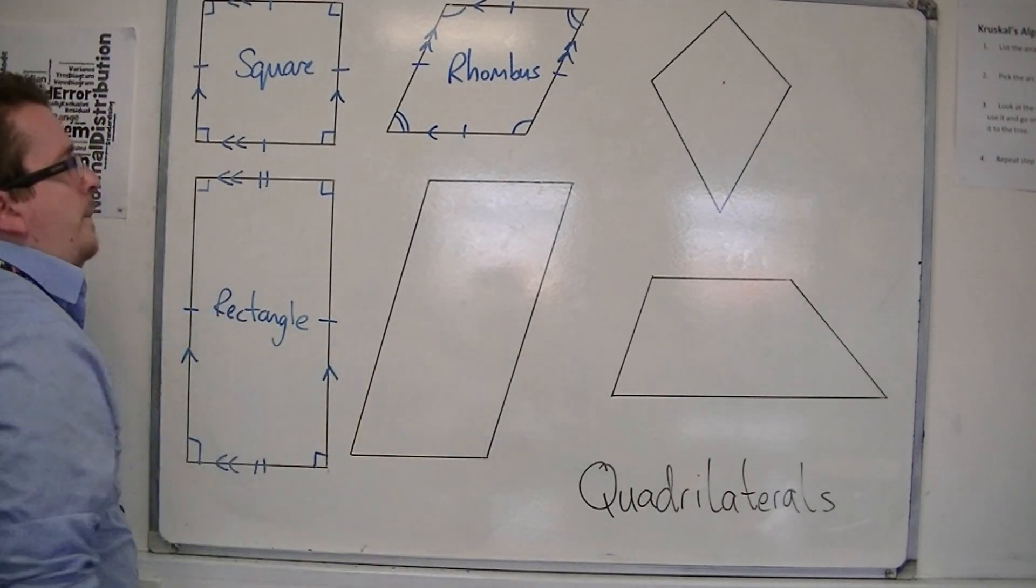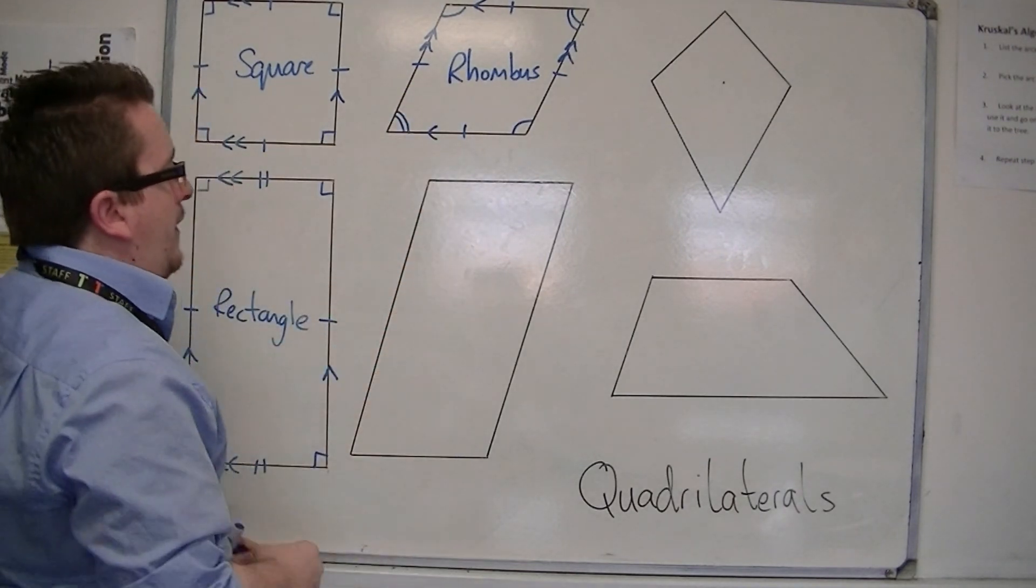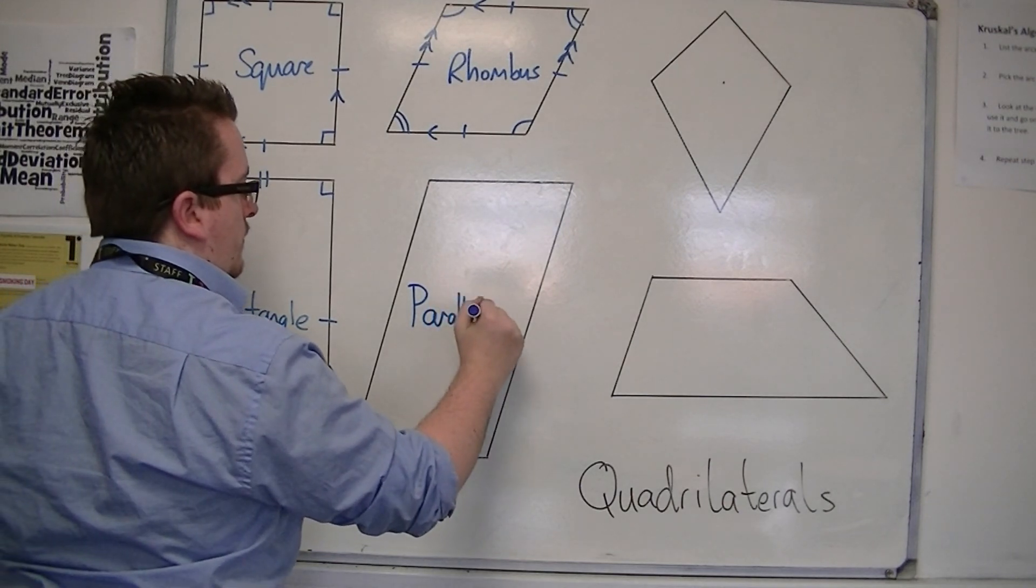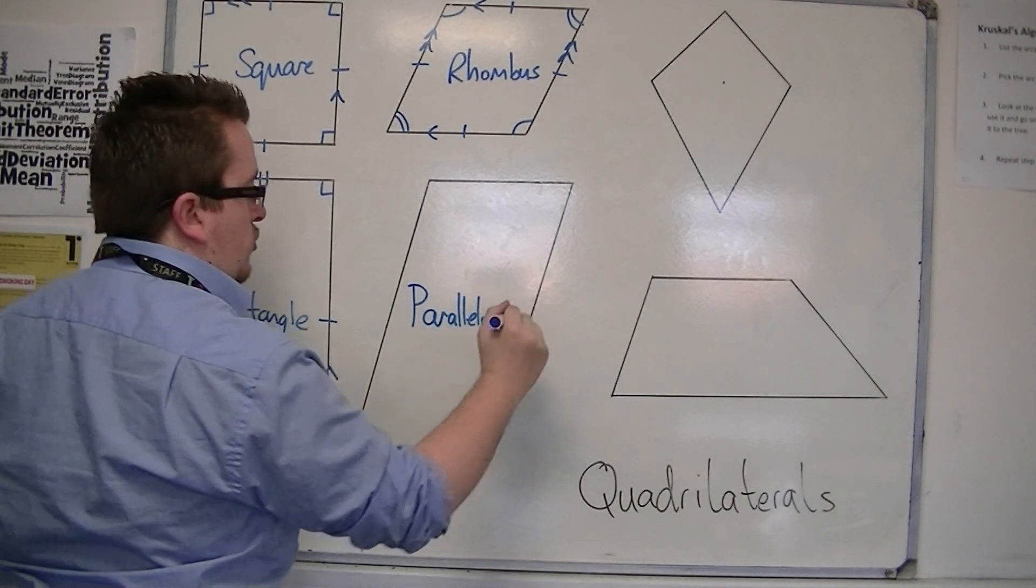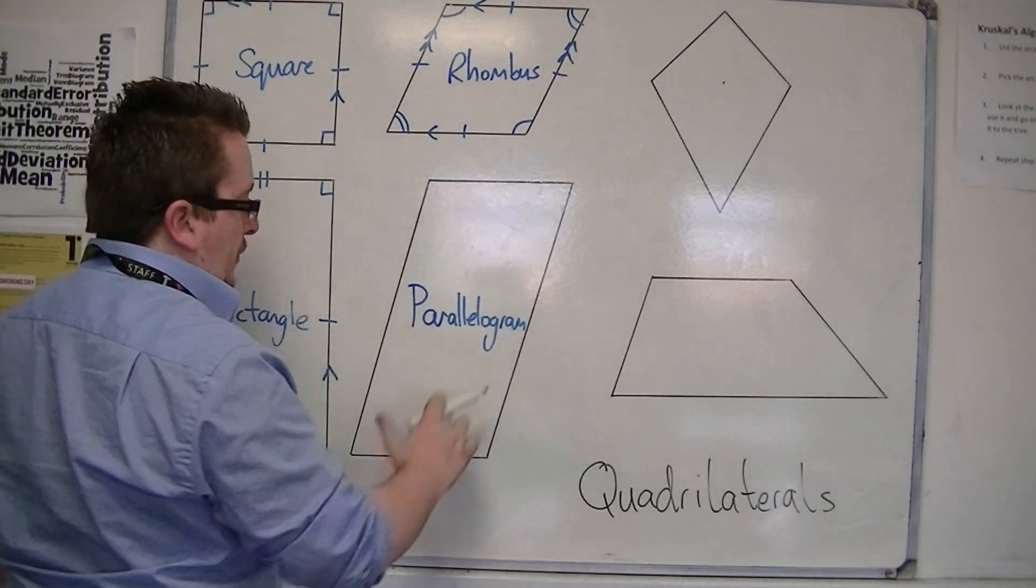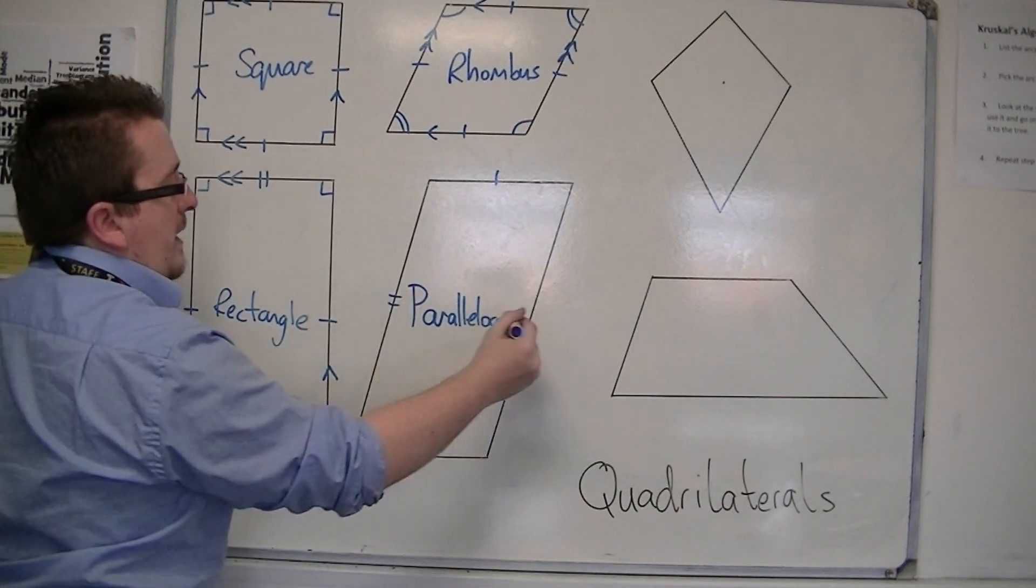Right. This one. This one is an elongated version of the rhombus, and it's called a parallelogram. If I can just about squeeze it in there. And the parallelogram has two sides of the same length. Those two. And these two are the same length.